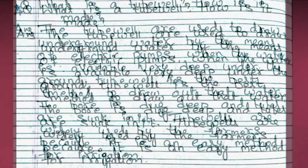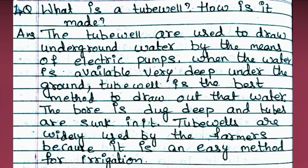Fourth question: What is a tube well? How is it made? Answer: Tube wells are used to draw underground water by means of electric pumps. When water is available very deep under the ground, a tube well is the best method to draw out that water. A bore is dug that deep and tubes are stuck in it. Tube wells are widely used by farmers because it is an easy method for irrigation.